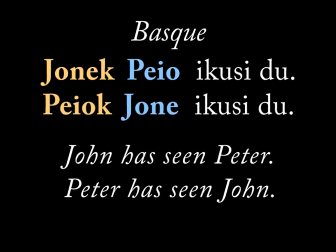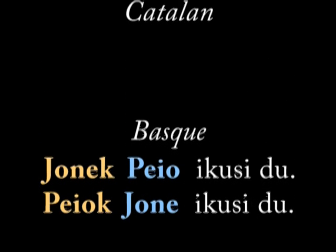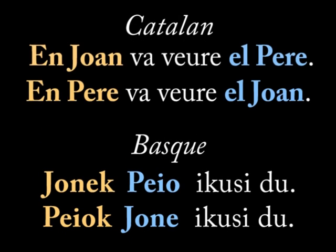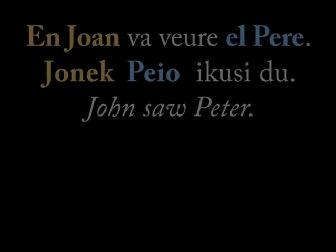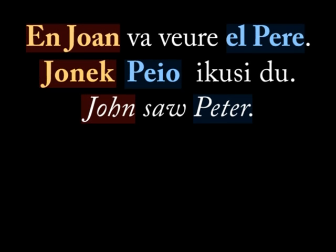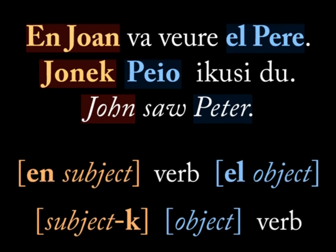In Basque, one sentence means 'John has seen Peter' and another means 'Peter has seen John.' We'll translate those sentences into Catalan. In all of those sentences we can see that the subject and the object are clearly marked — they're distinct. This is something we'd expect.